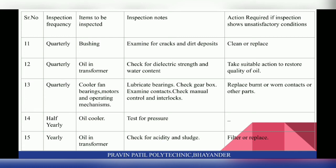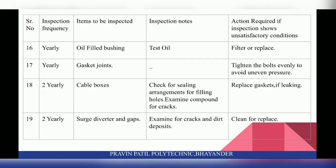On a half-yearly basis, check the oil cooler — test it for pressure — and the oil filter. On a yearly basis, check oil in the transformer for acidity and sludge; filter or replace if needed. Check oil-filled bushings — test oil in the bushing and filter or replace it. Check gasket joints; tighten the bolts evenly to avoid uneven pressure.